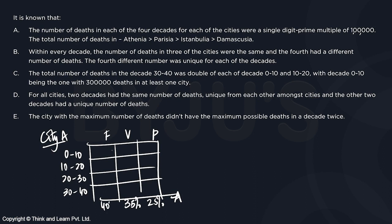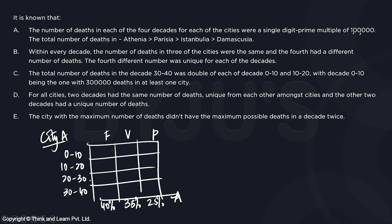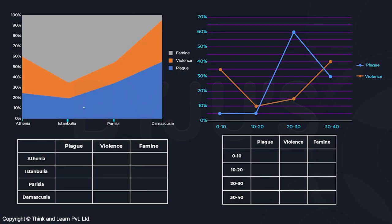The problem is we don't know city-wise decade breakdowns directly. We only know that out of total plague deaths across all cities, 5 percent occurred in one decade and 35 percent in another. So we need to combine the area chart and line graph together using the given conditions to build the complete picture.